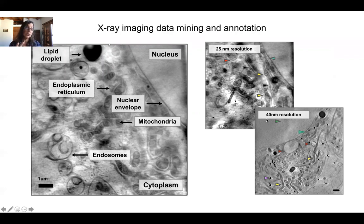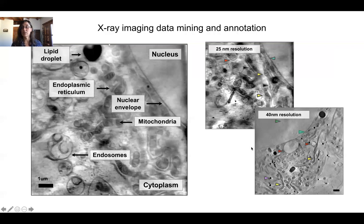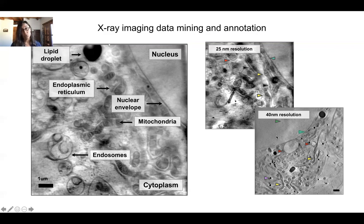We have two setups at the beamline. The 25 nanometer resolution optic gives fantastic resolution but a very small depth of focus and smaller field of view. The 40 nanometer resolution optic gives a much bigger field of view and greater depth of focus, so we get more information with a small sacrifice in resolution. Here you're looking at a U2S cell from a different project, showing the nucleus, a large endolysosome, mitochondria, a lipid droplet, and other features.